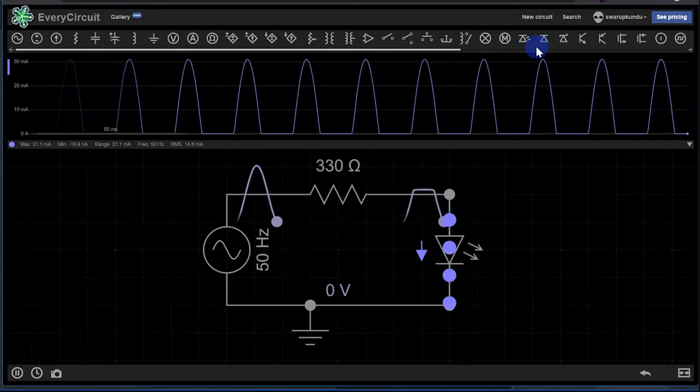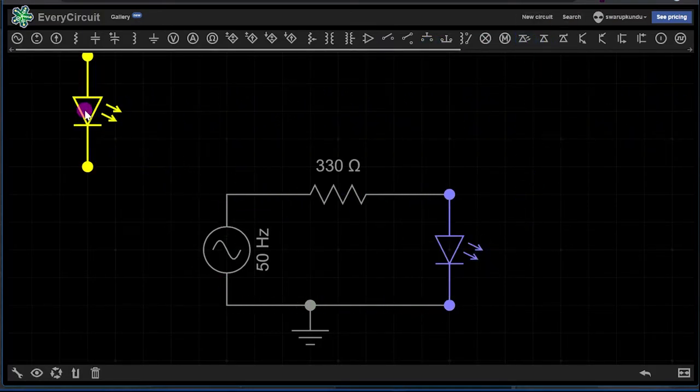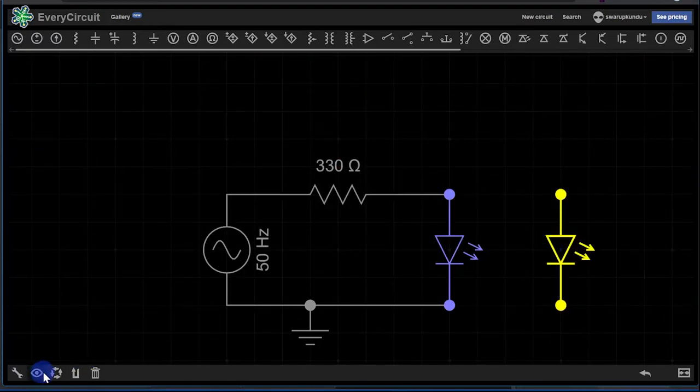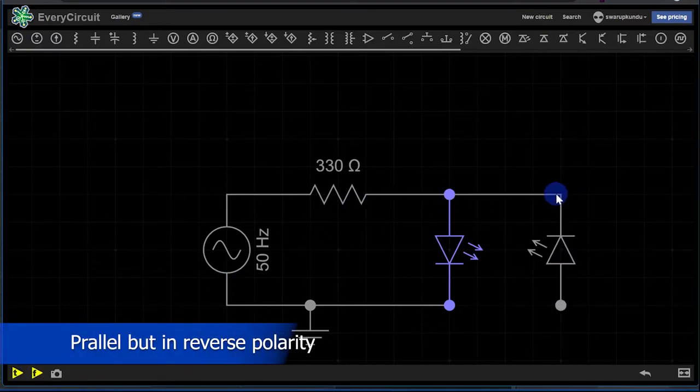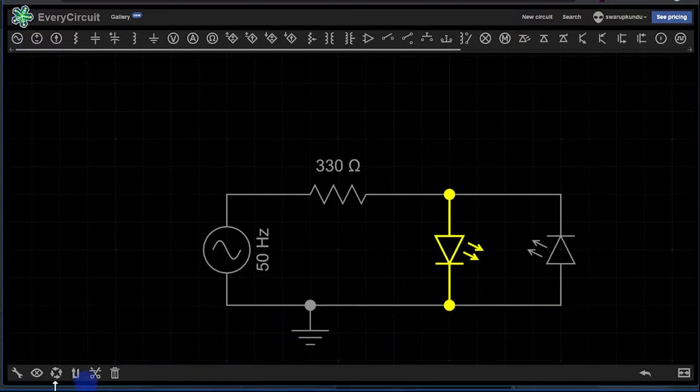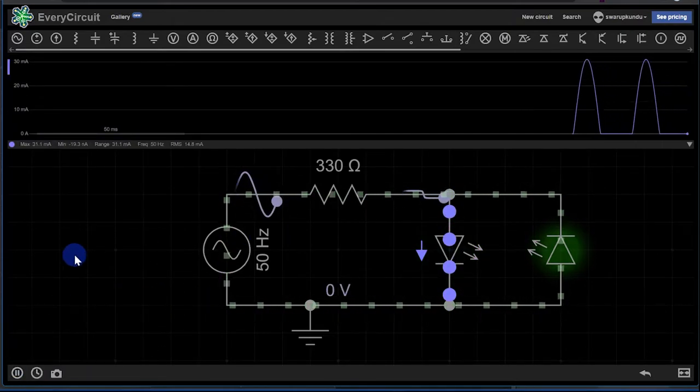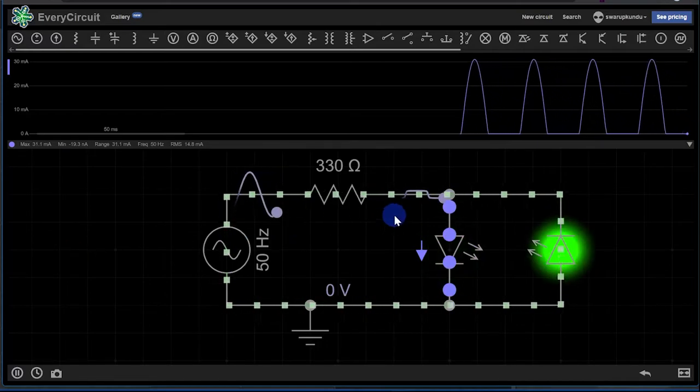Now what we can do is take another LED here and place it next to it. Let me just rotate this LED so that we can connect it in opposite polarity. Let's run the circuit again. As you can see, now they are glowing alternately and you see the flow direction of the current. One side is clockwise and the other anti-clockwise.